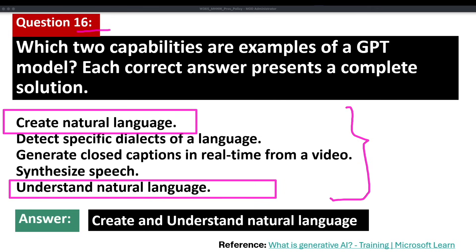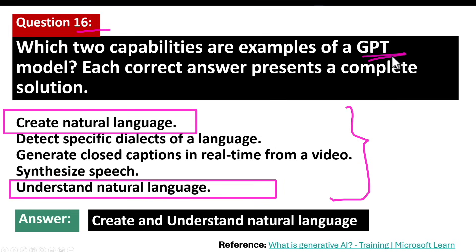What is a GPT model? GPT stands for Generative Pre-trained Transformer. GPT models are a type of artificial intelligence designed to understand and generate human-like text. These models have been trained on vast amounts of data and can predict what comes next in a sequence of words, making them highly versatile and powerful tools for various applications.